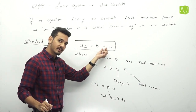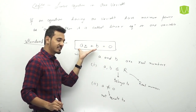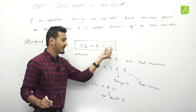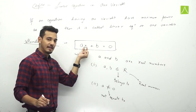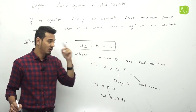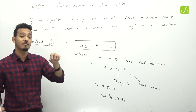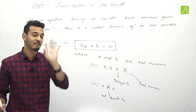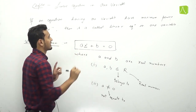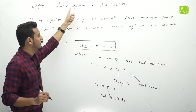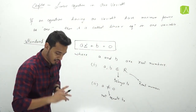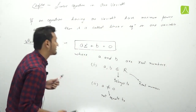यह हमारा standard form होता है linear equation in one variable का — ax plus b equals to 0. यह equation है क्योंकि equals sign है, left hand side पर कुछ है, right hand side पर कुछ है, variable x है, constant है a और b, और x की maximum power 1 है। तो linear equation in one variable. अब हम कुछ examples देख लेते हैं।